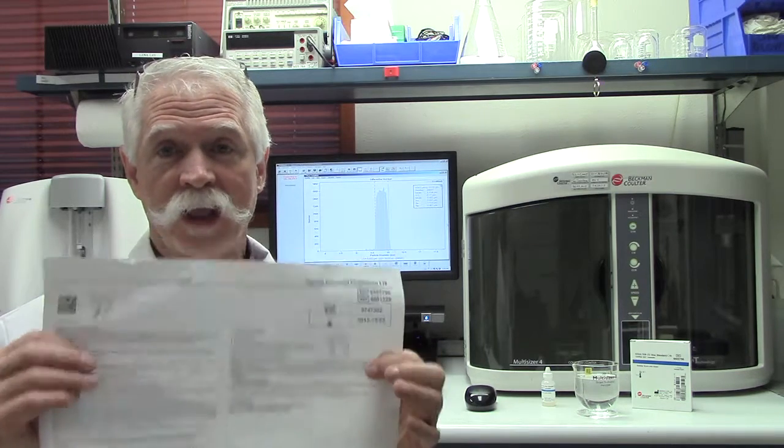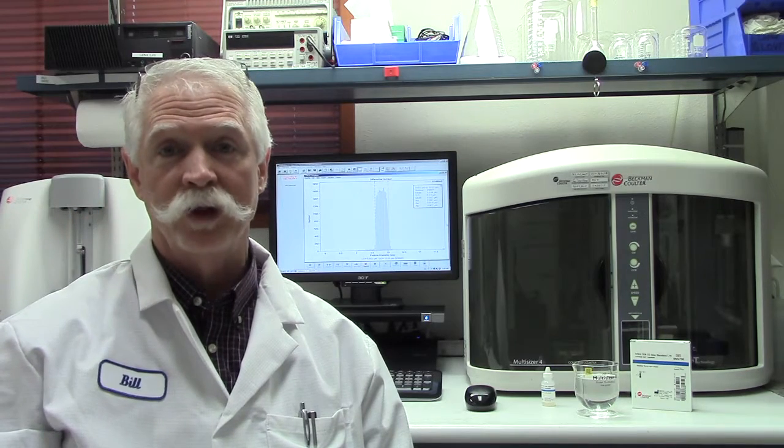When you open up the standards, you're going to find an assay sheet. The assay sheet contains three pieces of vital information. Number one: product description. Number two: calibration instructions. And number three: calibration data from which to compare your result to, to ensure the instrument is reading properly.